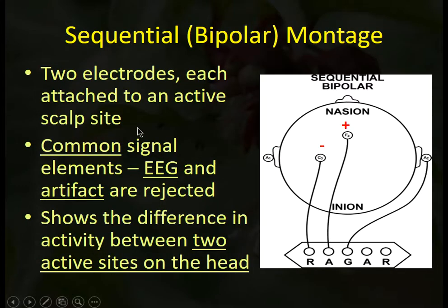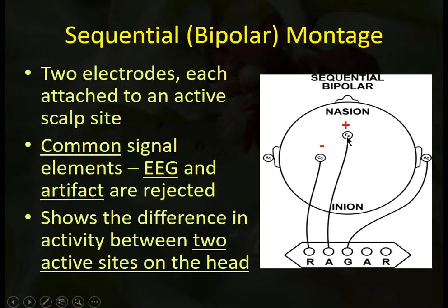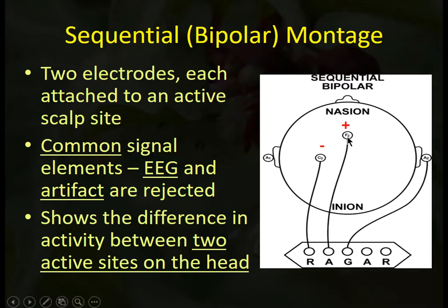There's another kind of montage called a sequential or bipolar montage, which compares two scalp sensors to each other. In this case, both sensors are over active EEG-producing electrode sites, so each electrode is picking up real EEG. The result on the computer reflects the difference between these two electrically active sites. As electrodes get closer together, the EEG waveforms seen at each input become very similar, so highly synchronous activity will be rejected — only the differences between the two locations are retained.